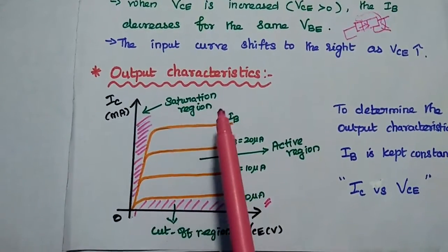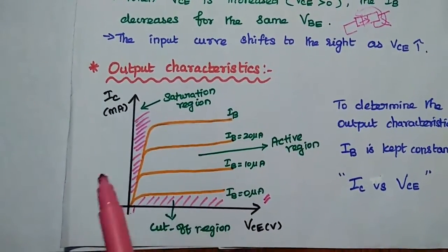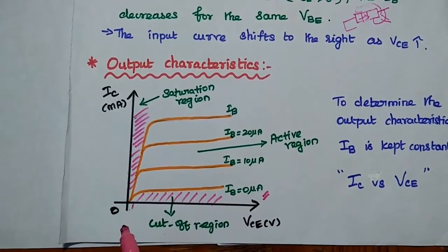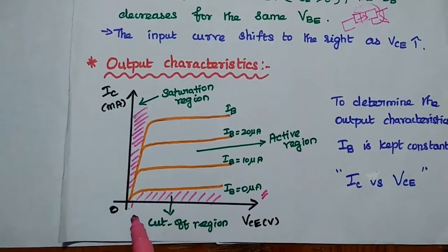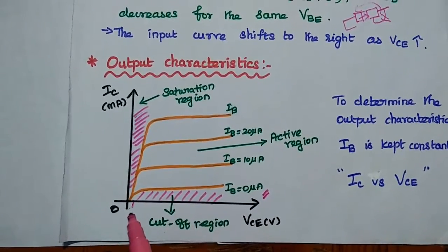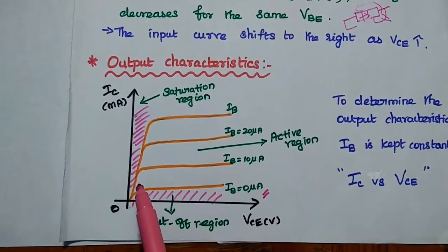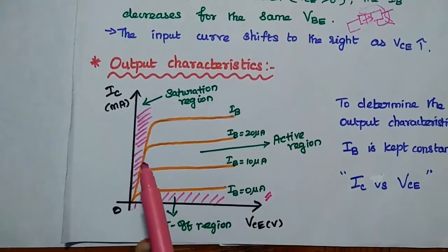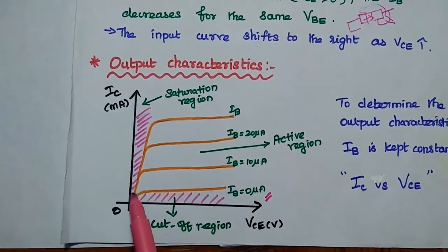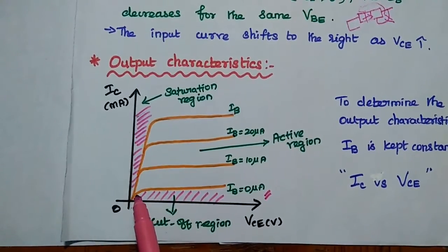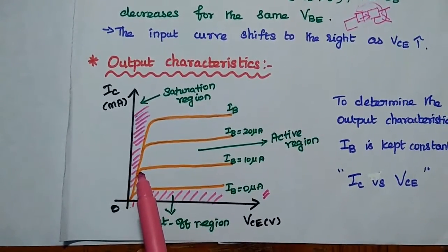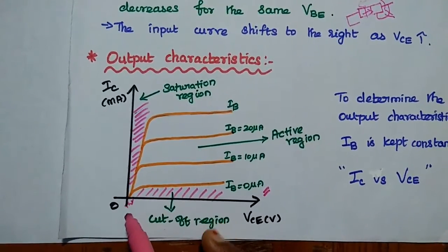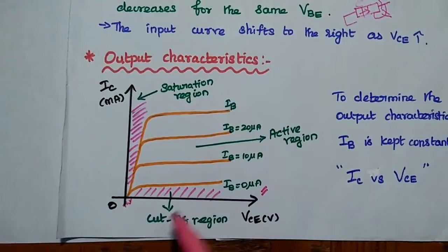The third region is the saturation region. Here, whenever the output voltage VCE is increased from 0 to a minimum value, there is large current conduction with a small increment of VCE. Up to the knee point, we see large current conduction that suddenly increases for a small increment of VCE. This range is very small and is called the saturation region.